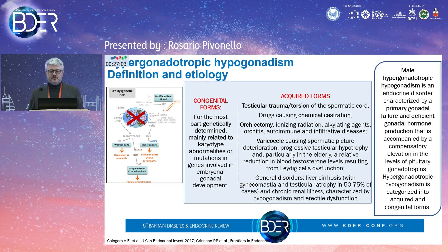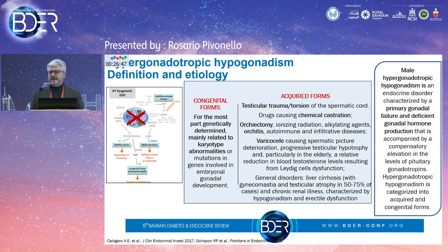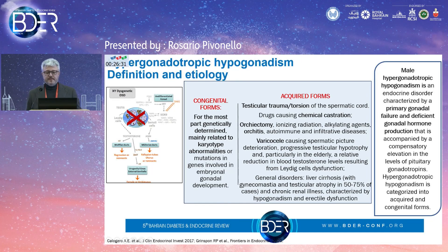Hypergonadotropic hypogonadism is probably the most common form of hypogonadism and is due to a primary defect or damage of the testis. We can have congenital forms — we will see later a slide on Klinefelter syndrome, which is the most classical congenital form of this kind of hypogonadism. We can also have different types of acquired forms generally associated with trauma or other diseases which can involve the testicular gland.